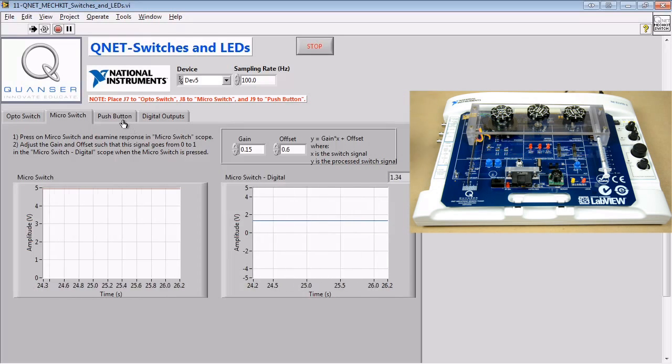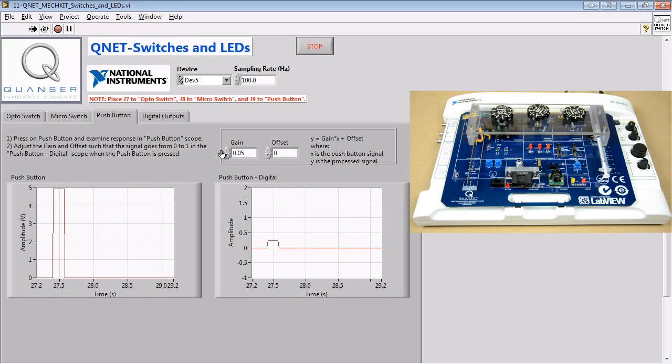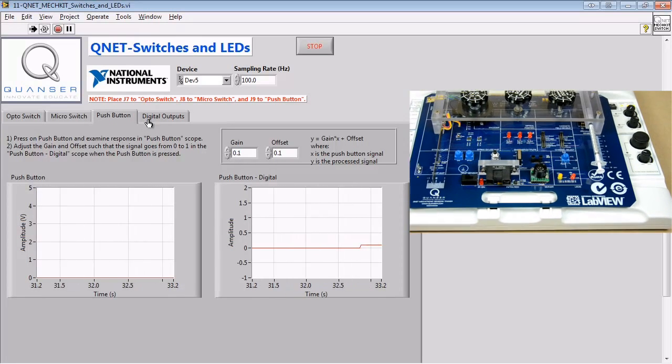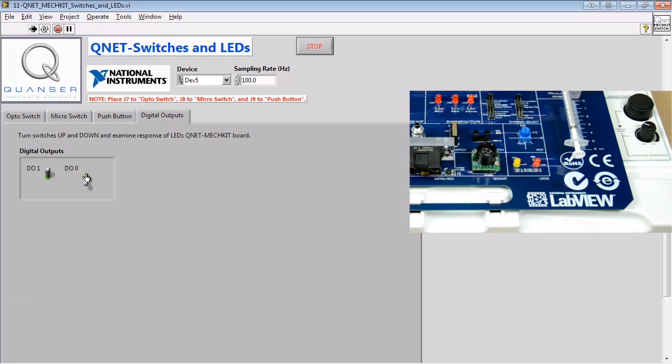We'll then observe the response to the push button being pressed. Again, we'll adjust the gain and offset to generate a digital output. Finally, we'll switch the values of the digital outputs and observe the response of the LEDs on the trainer board.